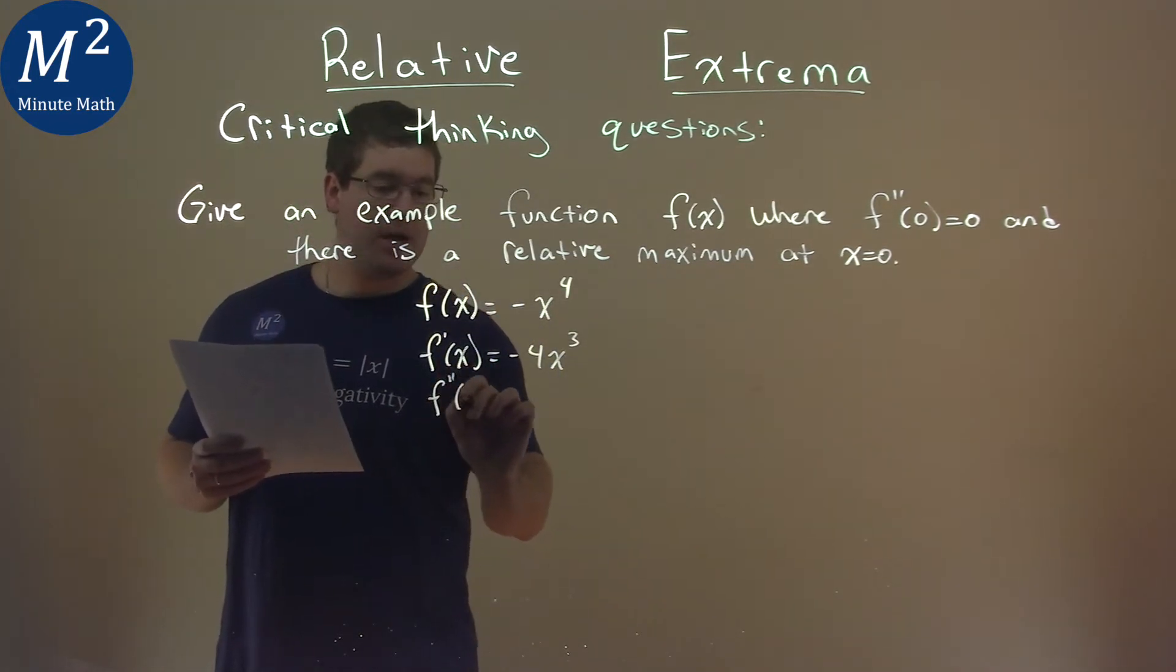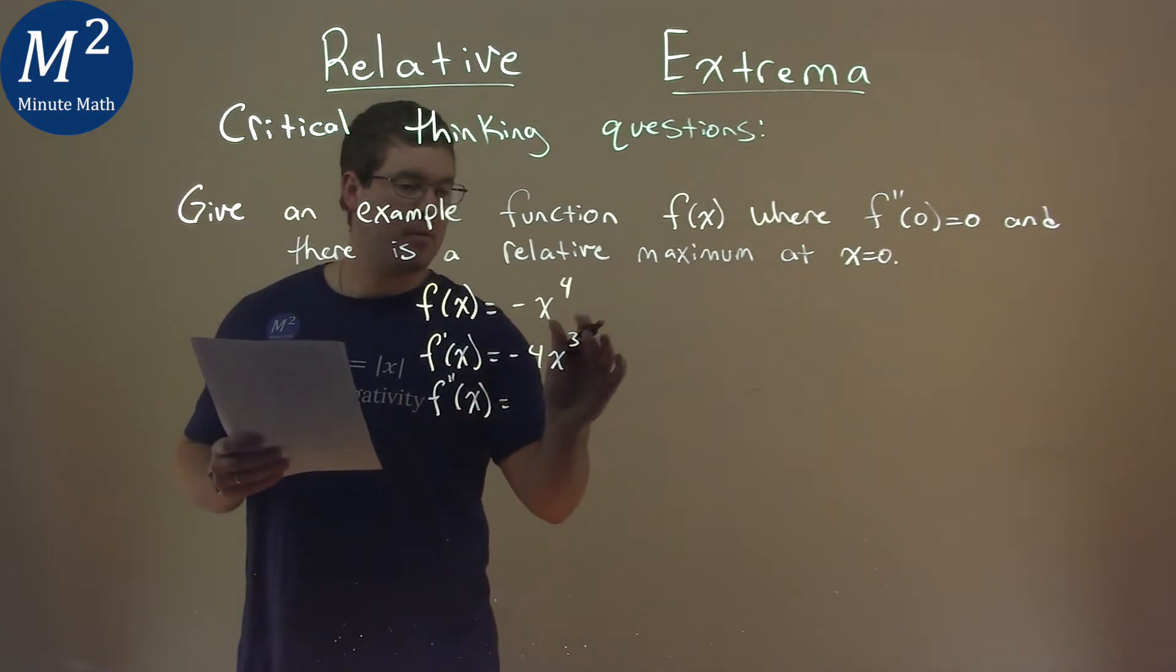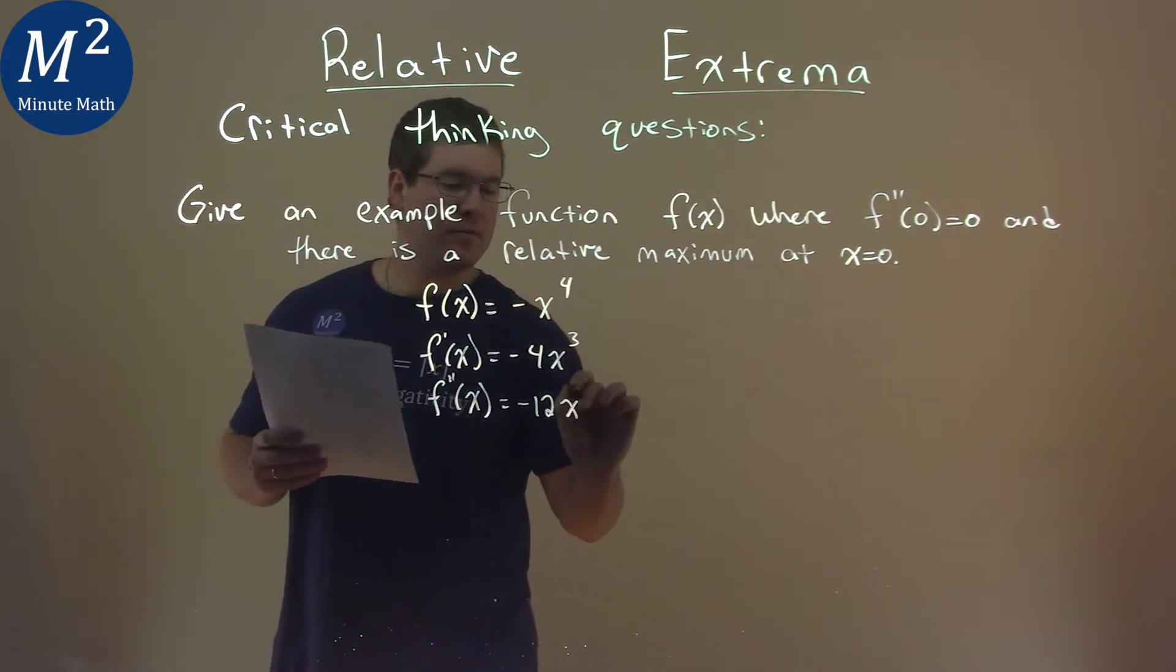To find the second derivative, f''(x) here, 3 times -4 is -12x^2.